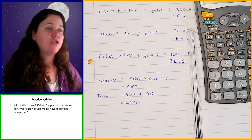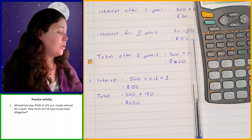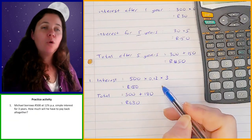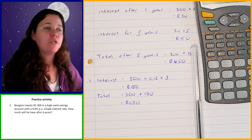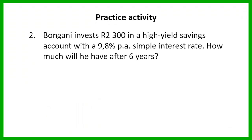Now I'm going to give you another example. See if you can do it in one step, working out all of the interest in one go. Bongani invests 2,300 rand in a high-yielding savings account at a 9.8% per annum simple interest rate. How much will he have after six years? I'm going to give you one minute to work this out.